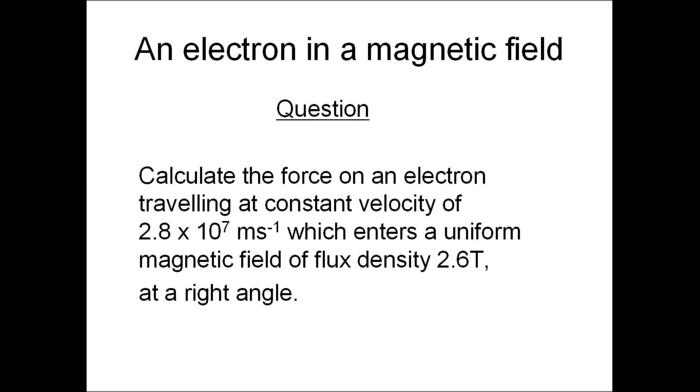Here's the question. Calculate the force on an electron traveling at constant velocity of 2.8 by 10 to the 7th power meters per second which enters a uniform magnetic field of flux density 2.6 teslas at a right angle.